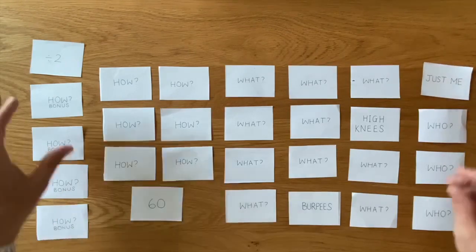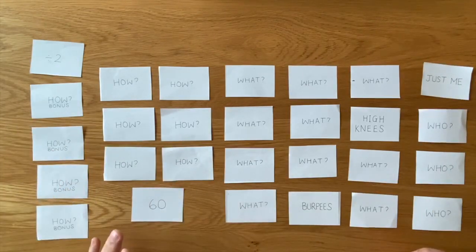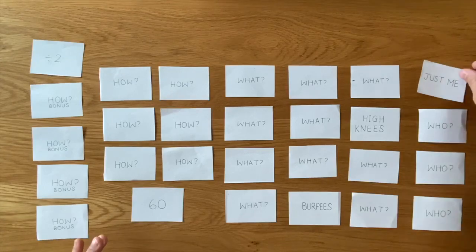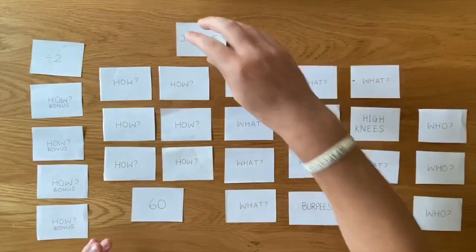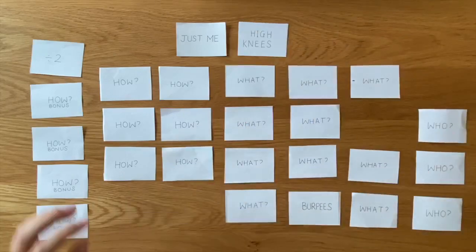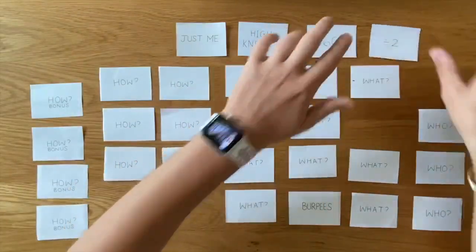So I asked them first what is 60 divided by two. They give me the answer of 30 which is fantastic. So then it is just me the one student doing high knees for will be 30 seconds.